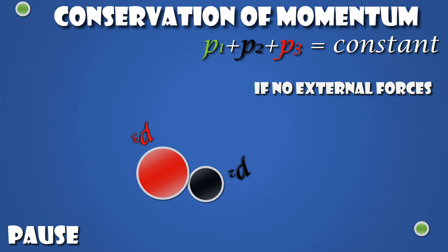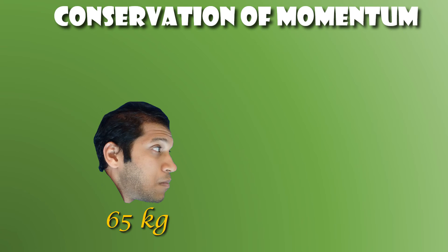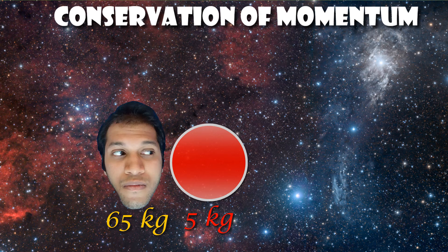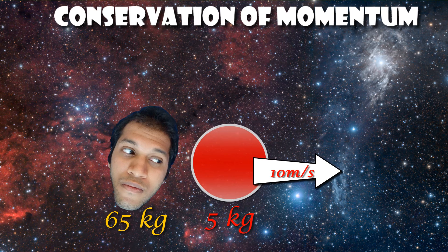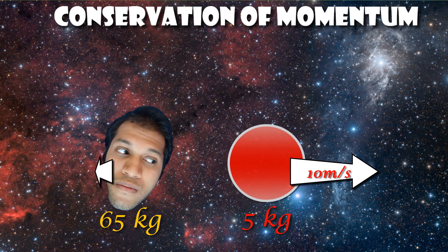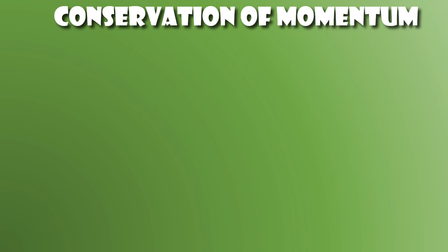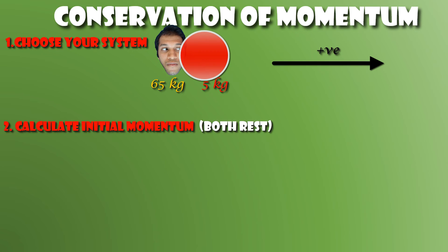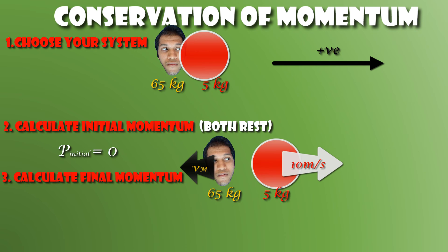This principle helps you solve some problems in just a couple of steps. Here is Mashie, weighing 65 kilograms, holding a 5 kilogram medicine ball somewhere in deep intergalactic space. Mashie gets bored and decides to throw the ball with a speed of 10 meters per second. I want to find the recoil speed. First step: decide what your system includes — clearly Mashie and the medicine ball. Then choose one direction as positive. Calculate the total initial momentum: since both are at rest, the initial momentum is zero. After the ball is thrown, the medicine ball gets a forward momentum of 5 times 10, which is +50 kilogram meters per second.